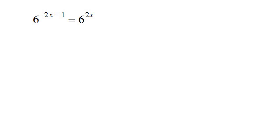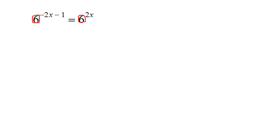An exponential equation is when you have an x in the exponent, either on both sides or on one side — it doesn't really matter. What you want to do is you want to make the bases the same. That is the goal. So, the goal is: make the base the same.